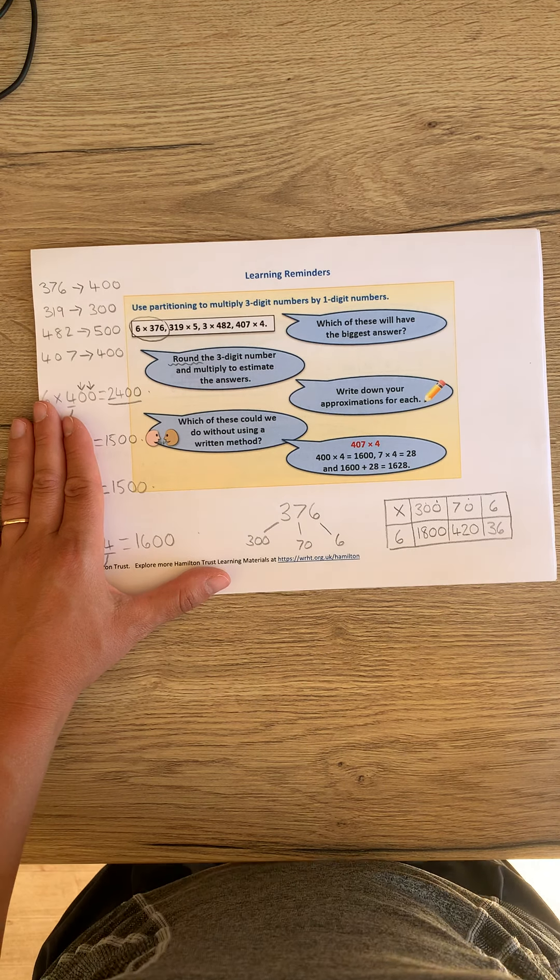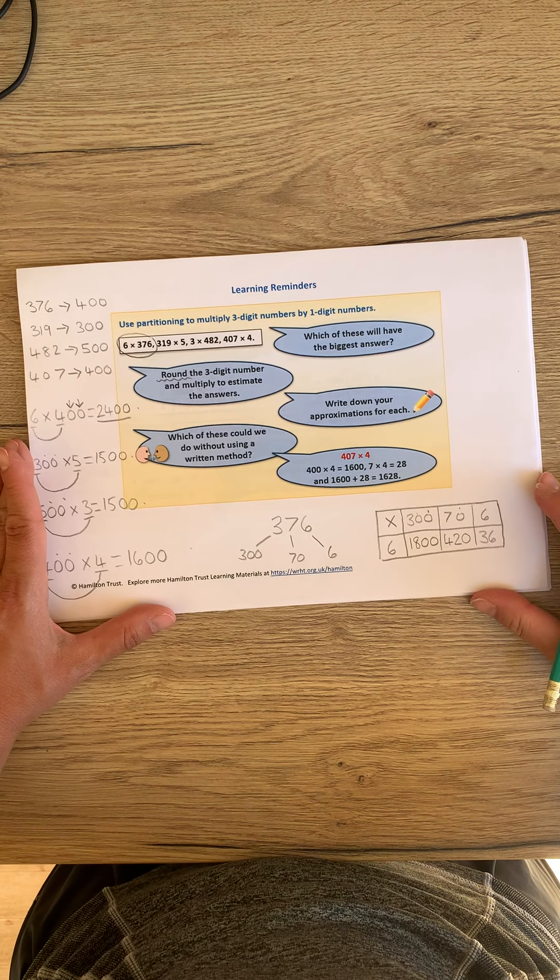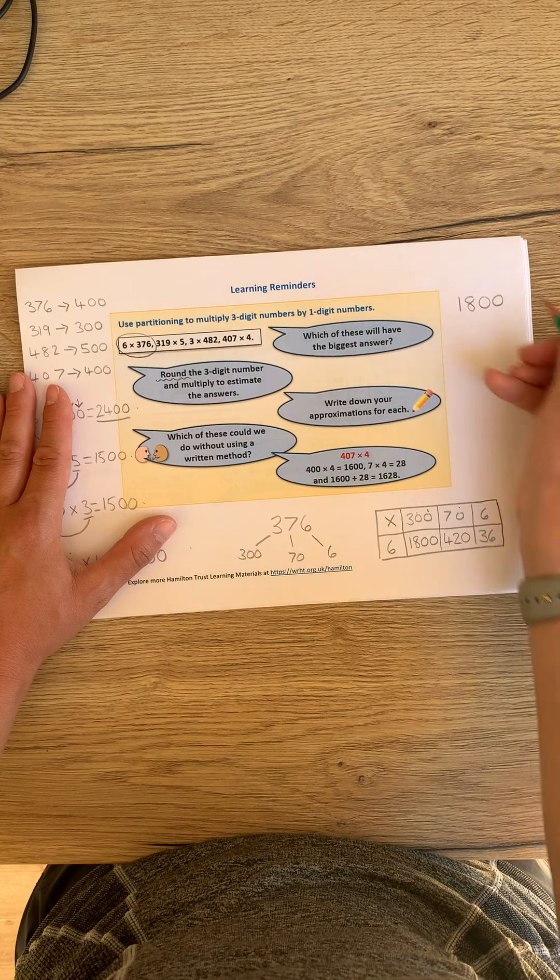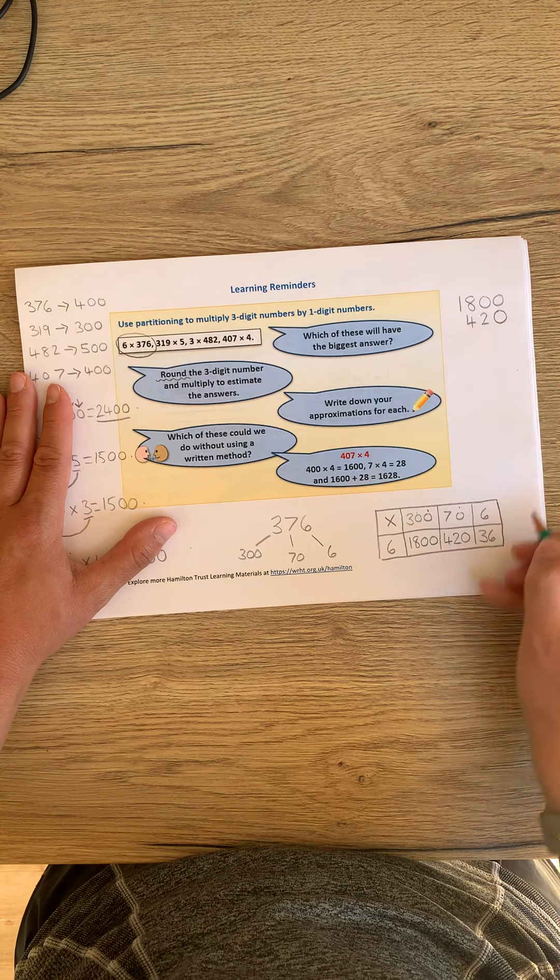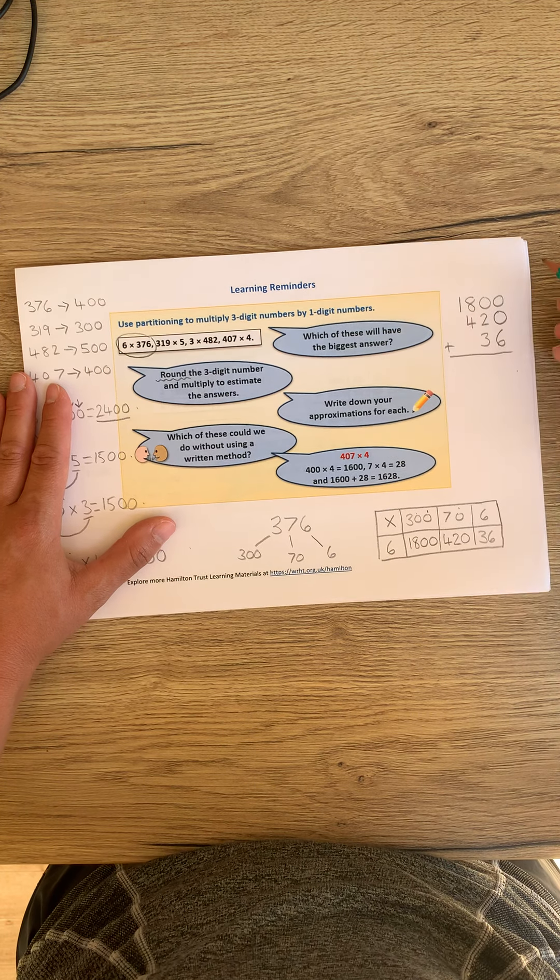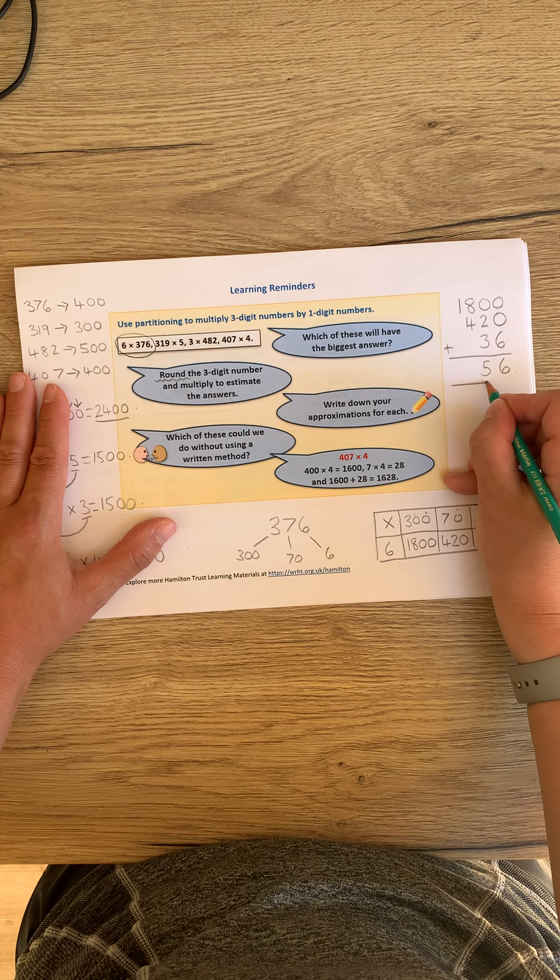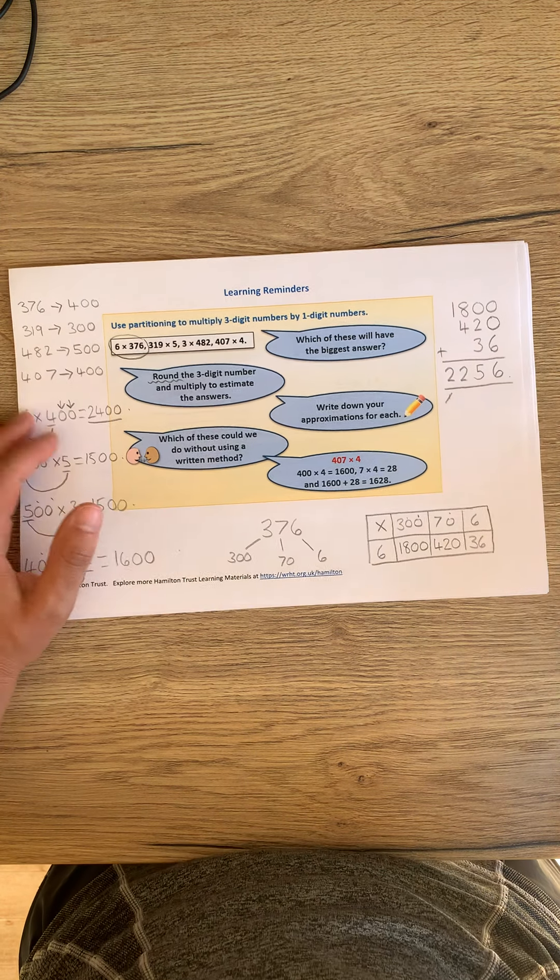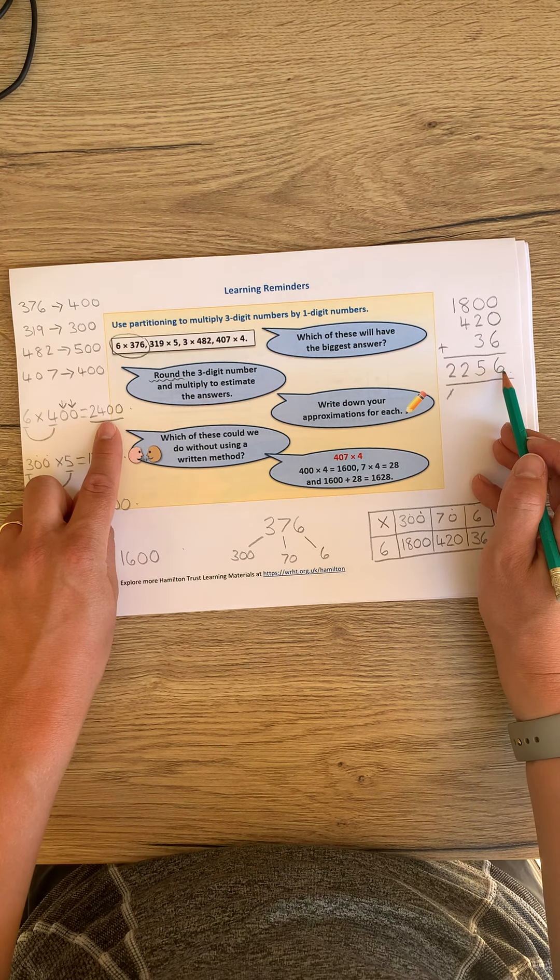So here I have my three answers. Now, to generate my final answer, I need to add these three together. Being very, very careful to make sure that my place values are in line. So 1800, 420, and you can see I've started with my 1s column to make sure they're perfectly in line, and 36. Put my add sign there. So we have 6, we have 5, we have 12, 1 and 1, and we have 2. So my final answer is 2256, which isn't far off my estimation here from my rounded method.